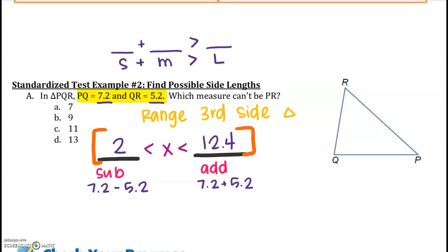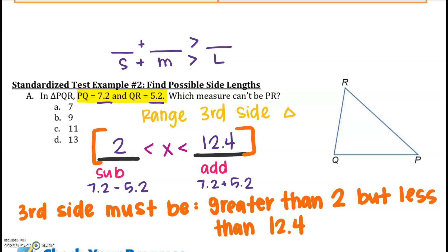It says that this third side must be greater than 2 but less than 12.4. So this statement is really important. You have to fill in the blanks, and it should look like this every single time. You're going to place your subtracted number here, you're going to place your addition number here. So it can't be above 12.4. Any number above 12.4 couldn't be a third side, and any number greater than 2. So the third side could be 7, could be 9. So D would be your answer that PR cannot be.